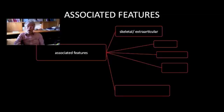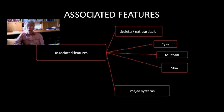We now get down to the main part of the presentation, which is looking at those parts of the systems inquiry that are particularly germane to the patient with rheumatic disease. We look at trying to construct a framework that incorporates most of the features and complaints these patients have. I've put them under the headings of skeletal or extra-articular disease, eye symptoms, mucosal symptoms, skin symptoms, and I've also included for completeness the major symptoms which are the traditional inquiry that one has in a systems review.